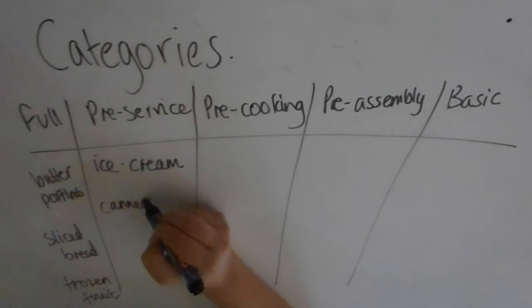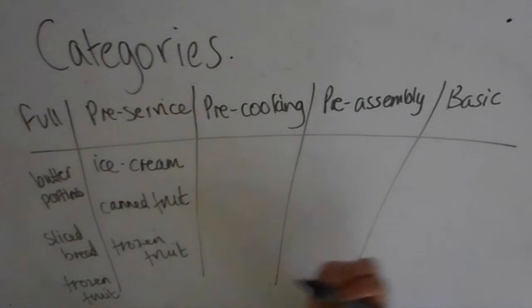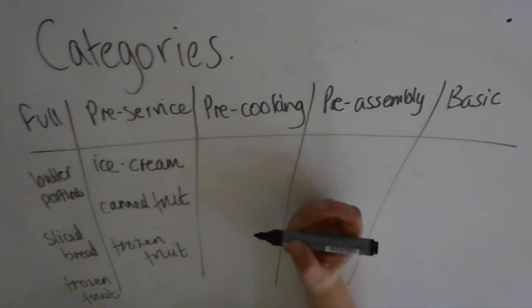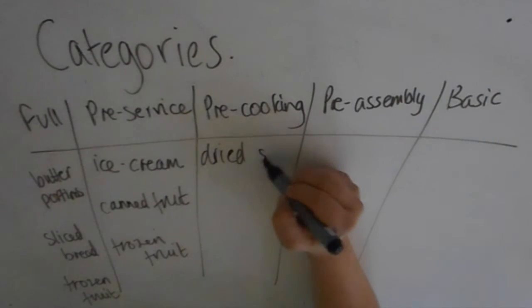For pre-service examples, I've got ice cream, canned fruit, and frozen fruit. With ice cream, if you're serving it as part of a dessert on your menu, all you would have to do pre-service is open the container and portion it using an ice cream scoop. Pre-cooking products have been prepared up until the point of cooking.